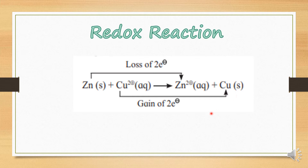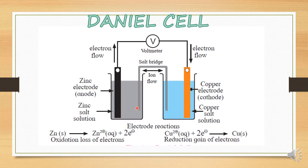This electron transfer from zinc atom to cupric ion can be demonstrated by carrying out two half-reactions in two separate containers. Let's start with Daniel's cell. This is the setup of Daniel's cell, where the zinc and copper plates are connected with an electric wire, a voltmeter, and a switch.